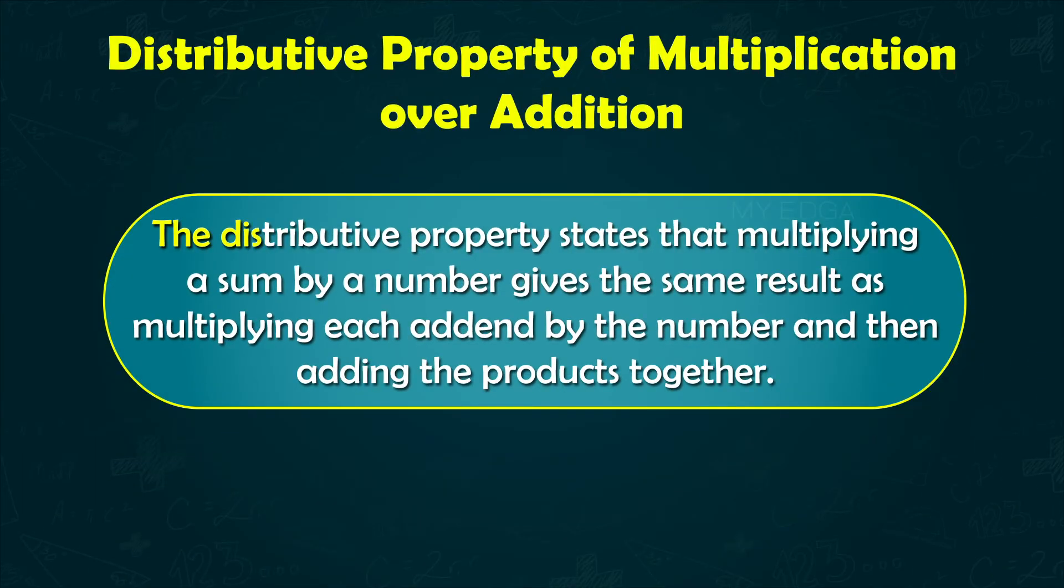The distributive property states that multiplying the sum of two or more addends by a number gives the same result as multiplying each addend by the number and then adding the products together.